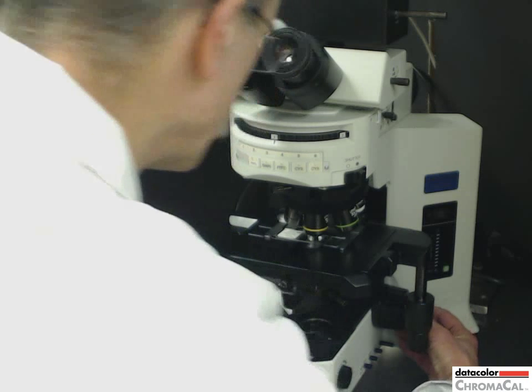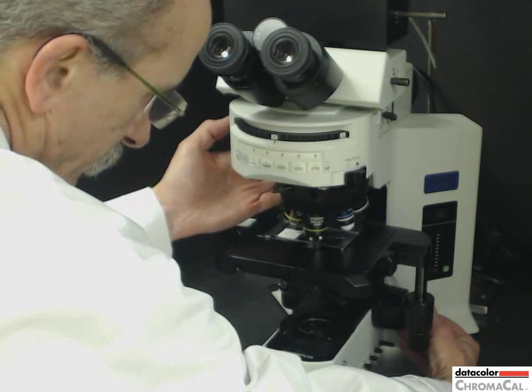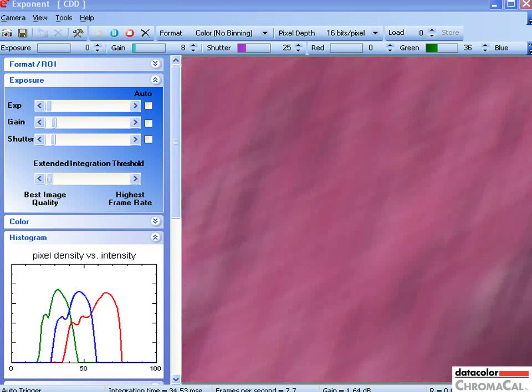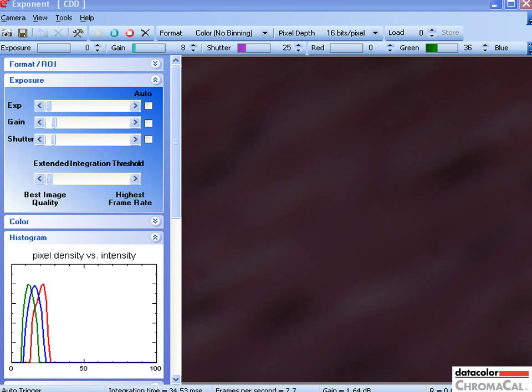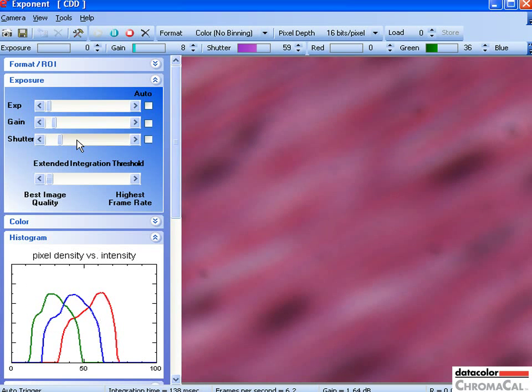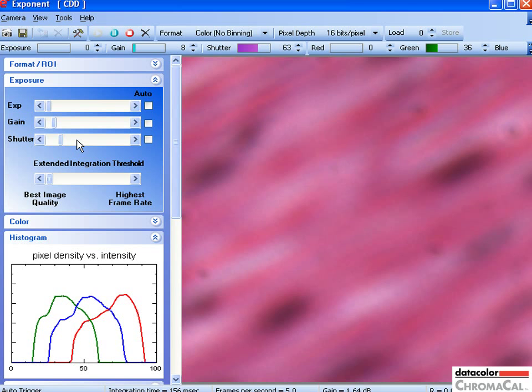When taking pictures, you will likely change objectives and the image will get darker or brighter. In the camera software, when you change objectives, you can see the image getting darker. Rather than turn up illumination on the microscope, focus and then adjust the exposure instead.